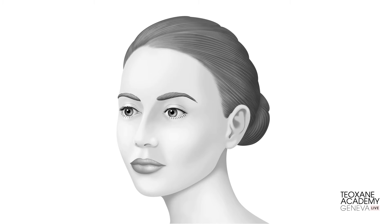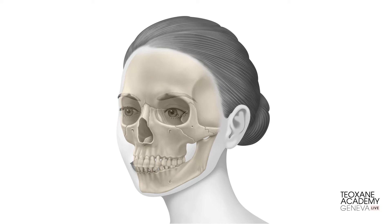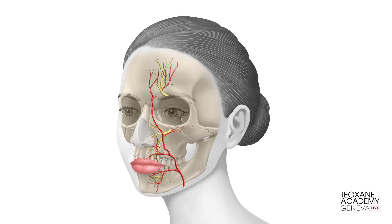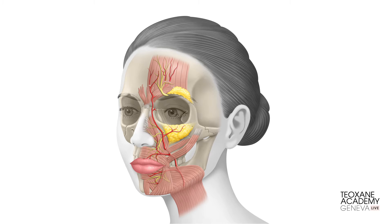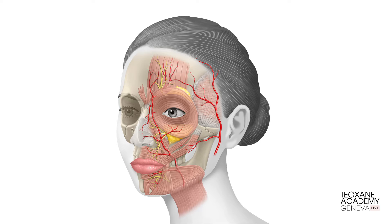Regarding anatomical danger in this area, the angular artery — a branch of the facial artery — runs in the naso-jugal groove along the side of the nose. Now let me introduce Francesco with the summary of the technique.